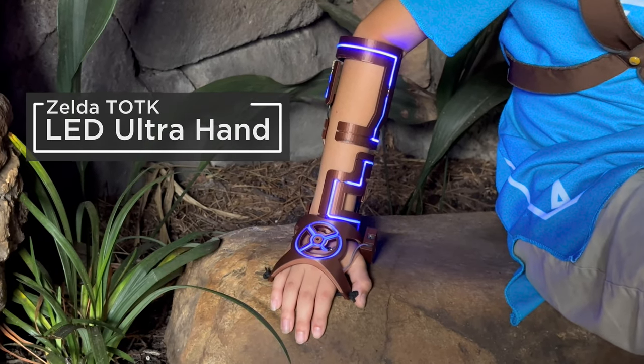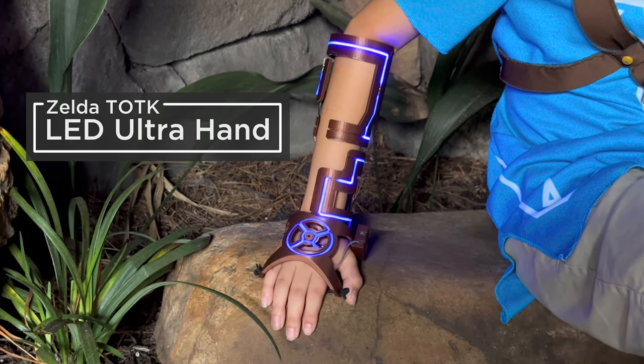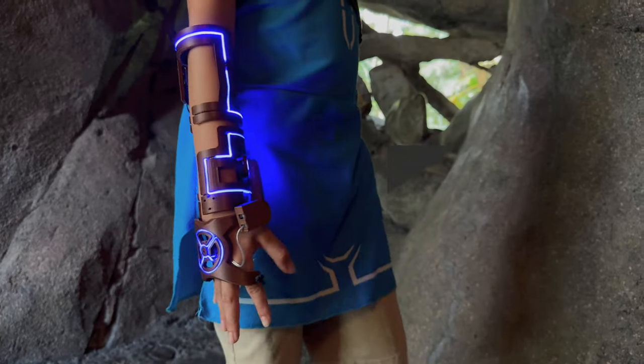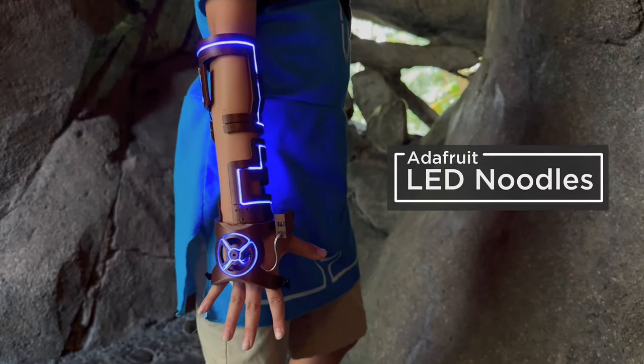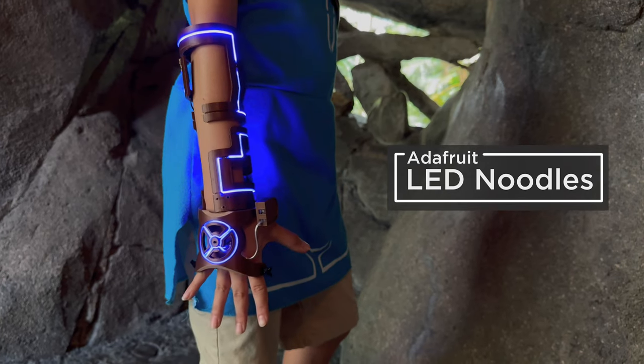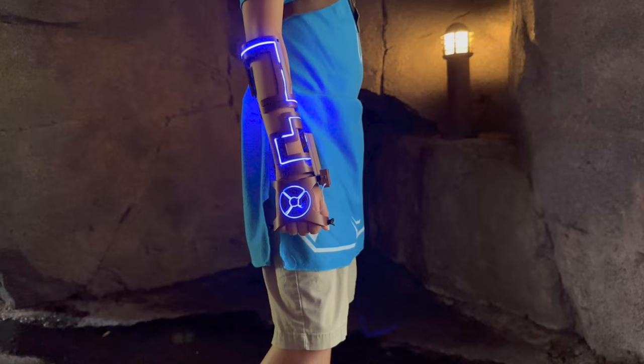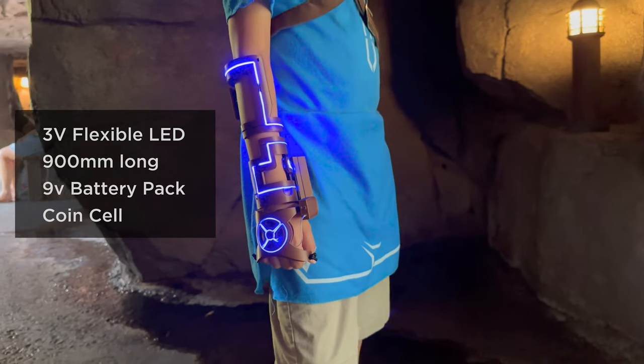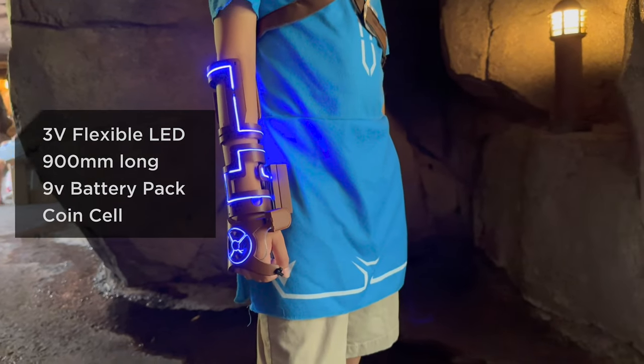You can build a prop replica of Link's Ultra Hand from The Legend of Zelda Tears of the Kingdom. We were inspired by Link's new ability to make a 3D printed prop that uses LED Noodles. It's a two-piece wearable that fits over your arm and the palm of your hand. The LEDs wrap around the arm band to resemble the ability's effect like in the game.